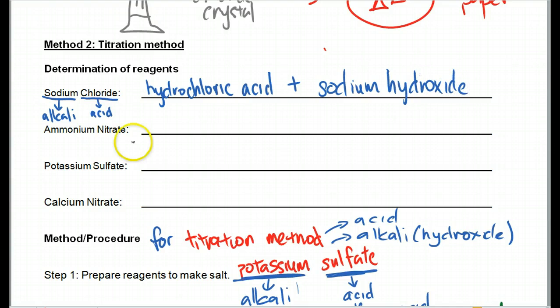Quite simple, isn't it? Now, same thing here, nitrate and ammonium. So nitrate will be the acid. Ammonium will be the alkali. What type of acid can be formed from nitrate? Nitric acid. And ammonium, what kind of alkali? Ammonium hydroxide.